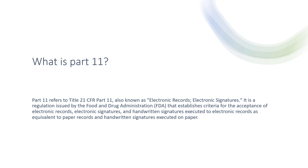21 CFR Part 11 applies to pharmaceutical, biotechnology, and medical device companies, as well as other FDA-regulated industries that choose to maintain records in electronic form instead of traditional paper formats. It outlines requirements for electronic record management systems, electronic signatures, audit trails, and validation of electronic systems to ensure data integrity, security, and reliability of data generated by equipment, instruments, and systems used in your industry.